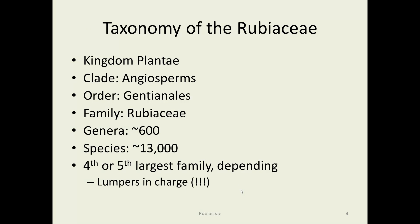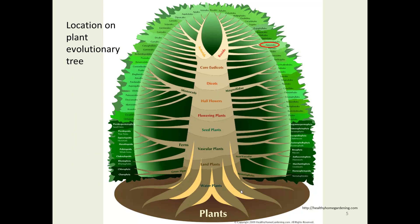This is the family Rubiaceae in the order Gentianales. It's the fourth or fifth largest family, depending on who you listen to. It's a case where the lumpers are in charge — they've been aggregating species rather than creating new ones. And even so, they have about 13,000 species in this family. We are located up in the rosid group on the upper right of the plant evolutionary tree.